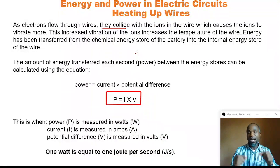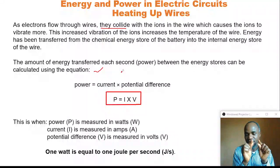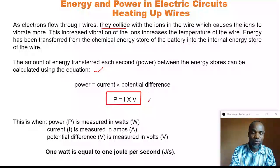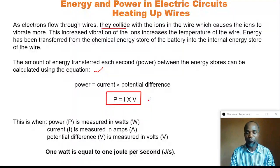Therefore, the amount of energy transferred each second—that's power—between the energy stores can be calculated using this simple equation: power is equal to current times potential difference, P = I × V.